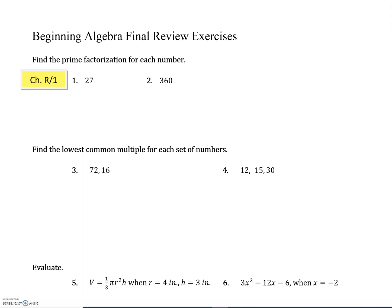For number one and number two, it says find the prime factorization for each number. Number one is 27, so we're going to start with just any two factors we can think of: nine and three multiply to be 27. Then we're going to keep breaking it down until we can't break it down anymore, so we get to prime numbers. So our prime factorization for 27 is three times three times three, or three to the third power.